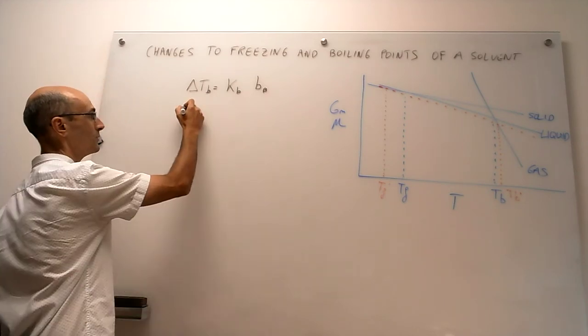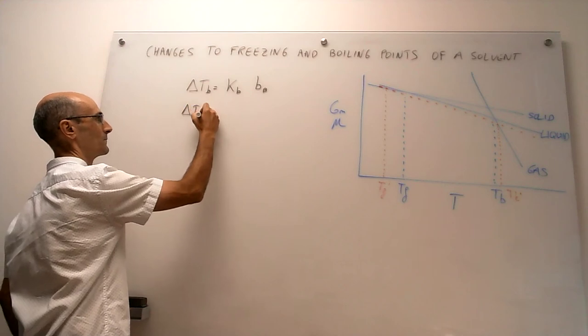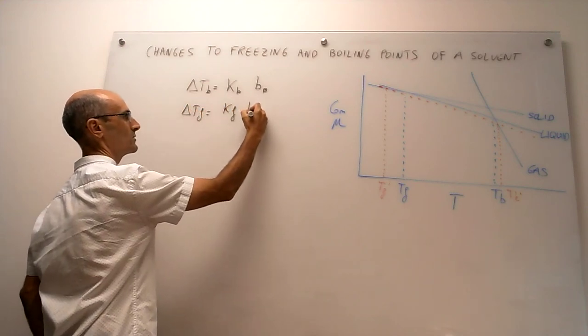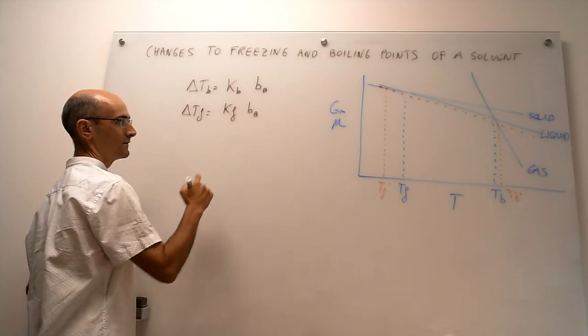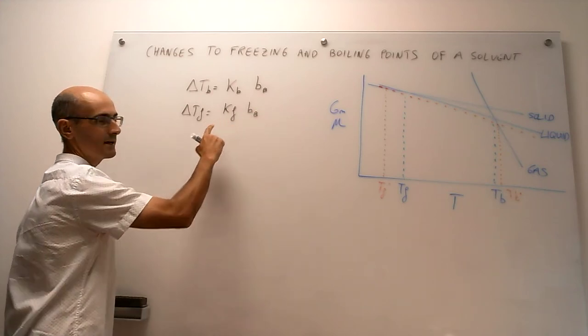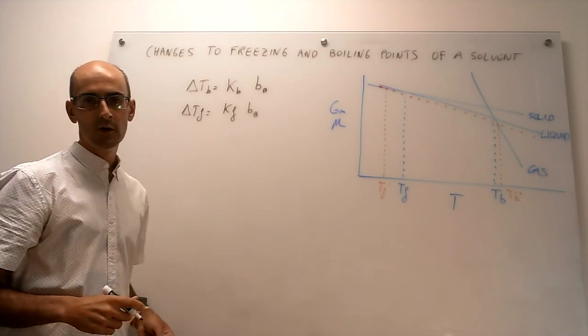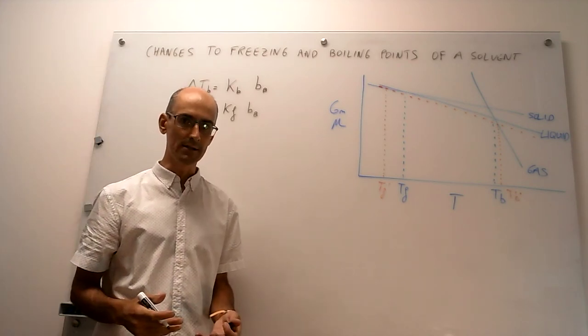And then the change to the freezing point is going to be straightforward as well. It just has the same form, right? So it also depends linearly on the molality of that solution, of that solute in the solution, but that is the freezing point constant, which we also call the cryoscopic constant.